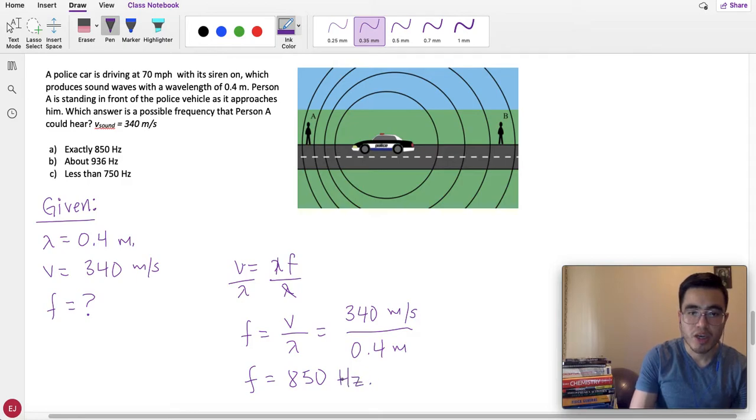Now, before we continue, this frequency is the frequency of the siren if the vehicle was just standing. If it wasn't driving towards A or B. If it was just parked and the siren was on. They would hear a frequency of 850, both of them. But, it's not parked. It's moving. So, we have Doppler effect. By this, I'm saying 850 cannot be the answer because the car is driving. So, not A. Not exactly 850.